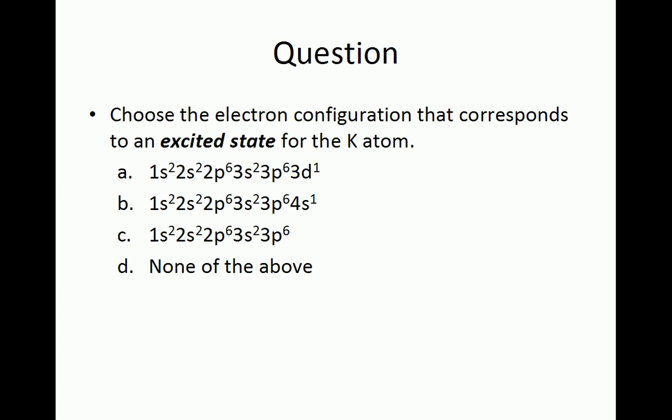Option B: 1s2, 2s2, 2p6, 3s2, 3p6, 4s1. Option C: 1s2, 2s2, 2p6, 3s2, 3p6. Or option D, none of the above.